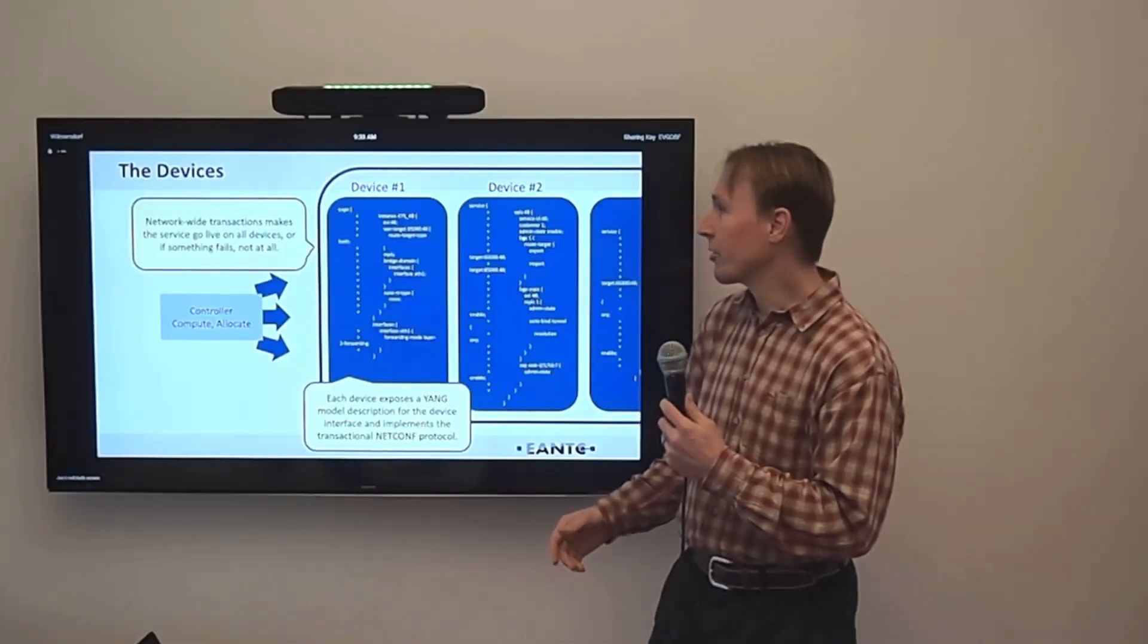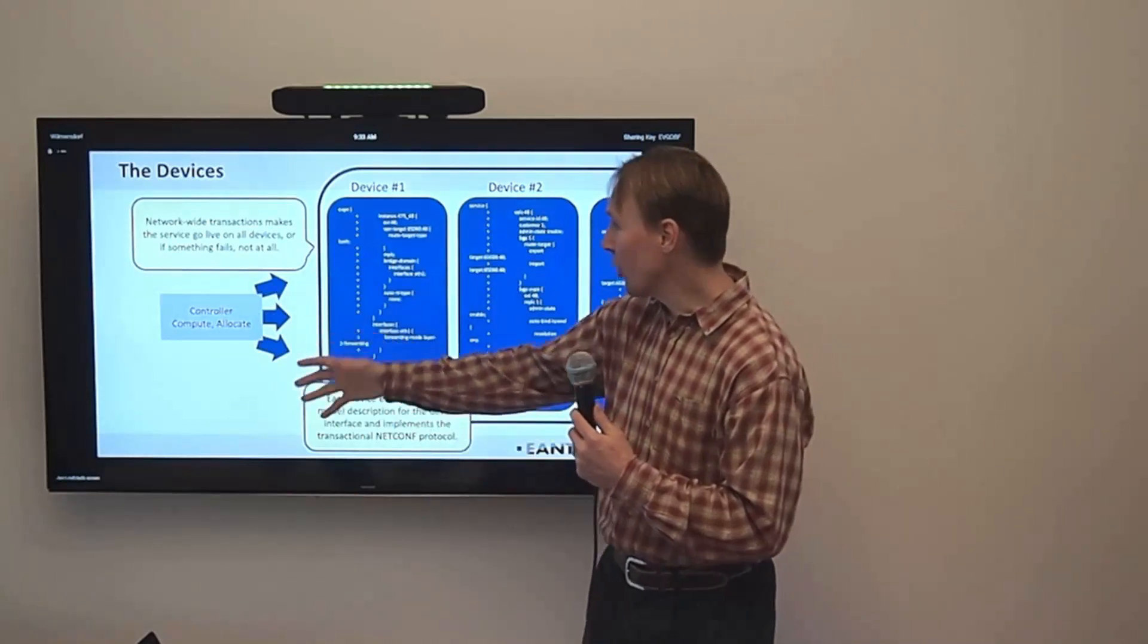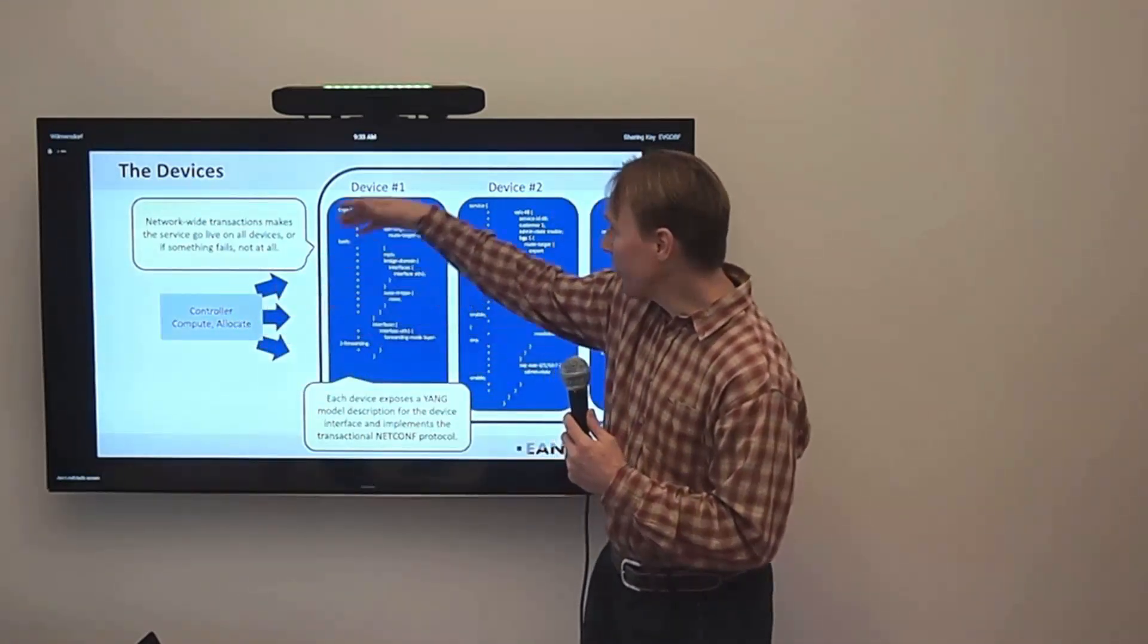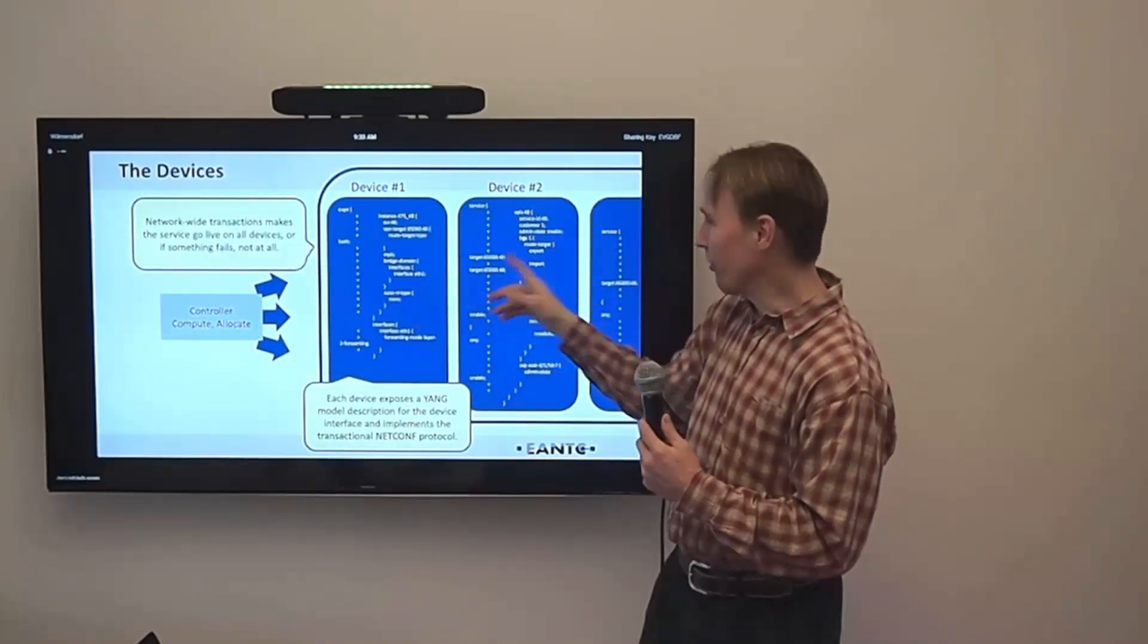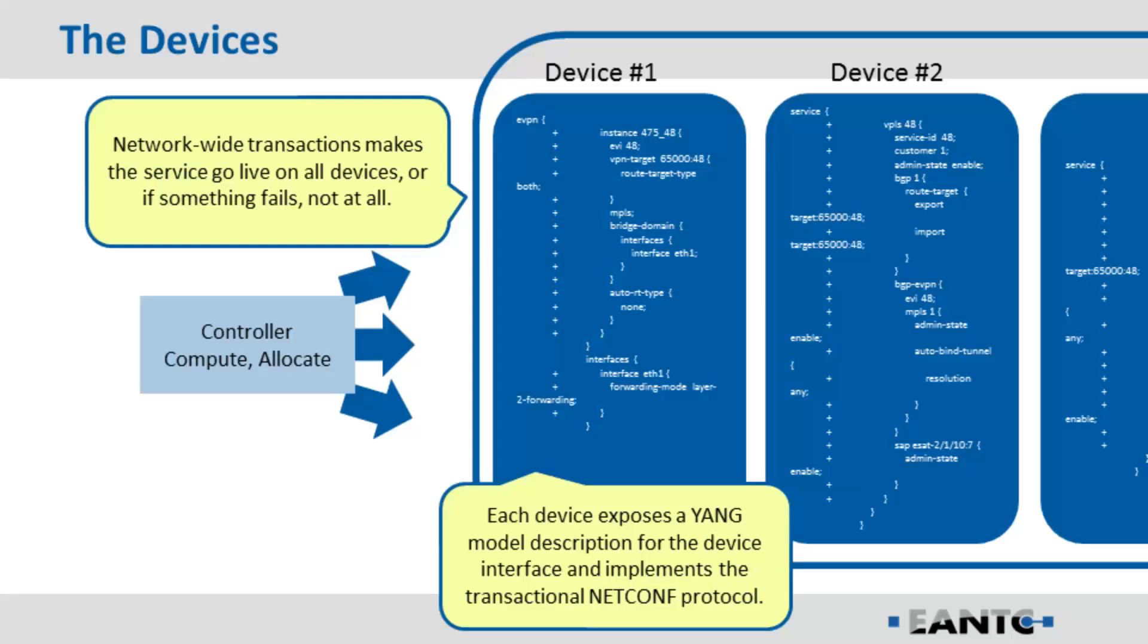And then, once this has been allocated and computed, the controller will then send out one configuration to device one, another one to device two. And they are typically from different vendors. So, they have different ways of expressing this particular service. And the roles that these devices have might be slightly different. And this can be any number of devices, obviously. So, each of these devices, they expose a Yang interface for their API. And we are then using NetConf to provision the services on top of this.